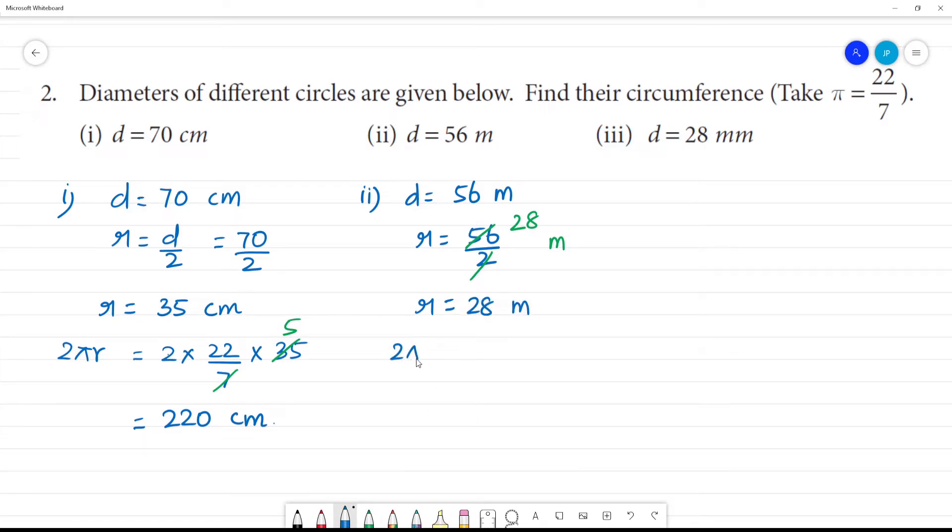Then what is circumference? 2πr is equal to 2 into 22 by 7 into 28. Now cancel: 1 times 7 is 7, 4 times 7 is 28. That is equal to 44 into 4. 4 times 4 is 16, remainder 1. 176 meters.